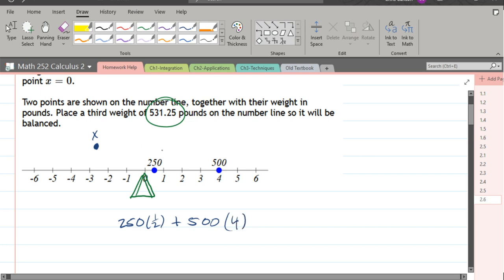There's one more weight, which is 531 pounds, or .25 pounds. And this is going to be at position x. Now in order for this to not tilt left or right, we have to add all these up and get zero. So they're all going to cancel out.